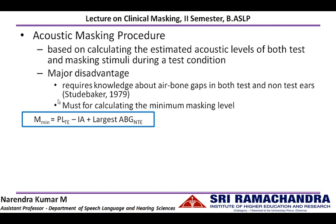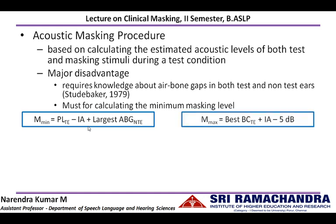When noise of this level is present in the non-test ear, it is made sure that it will not result in under-masking. Leiden et al. also gave a formula for calculating the maximum masking level, which equals the best bone conduction threshold of the test ear plus interaural attenuation minus 5 dB. To calculate the accurate minimum and maximum masking levels, we require the true bone conduction threshold, the air-bone gap, and the interaural attenuation. With maximum masking level of noise in the non-test ear, any noise slightly higher than this level can result in over-masking.